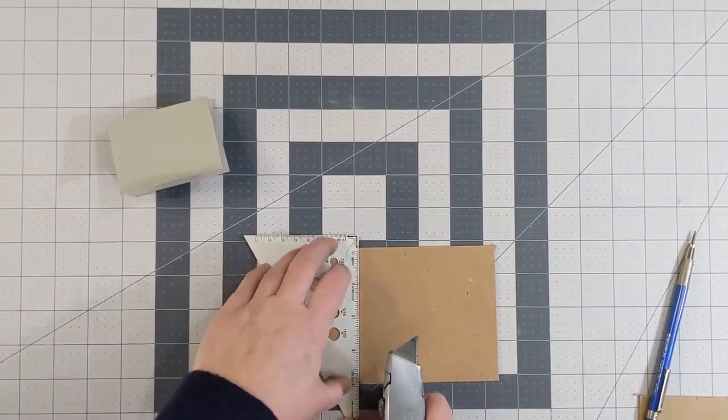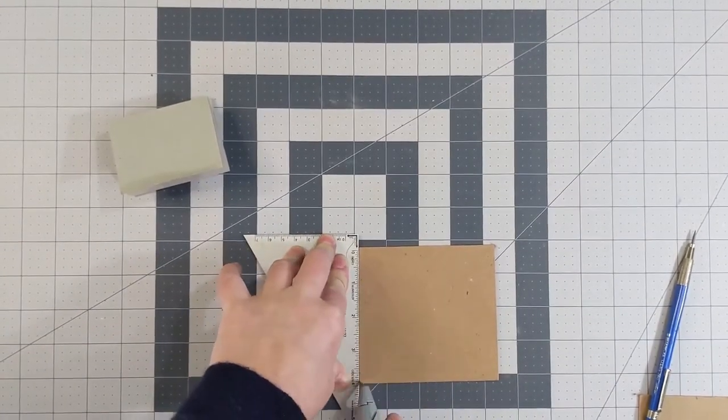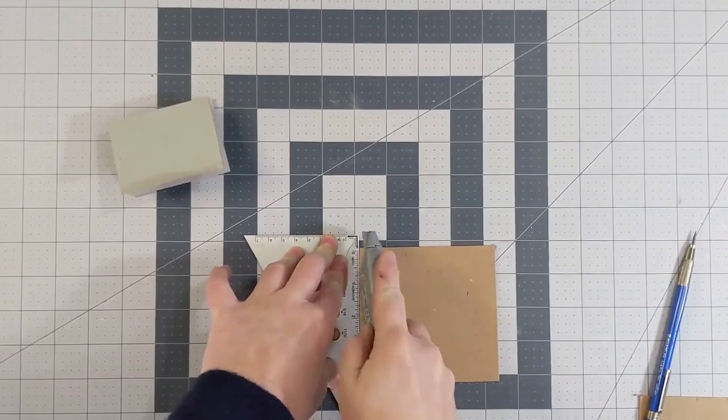With the ruler and a box cutter, gently cut the lines to cut your board out.